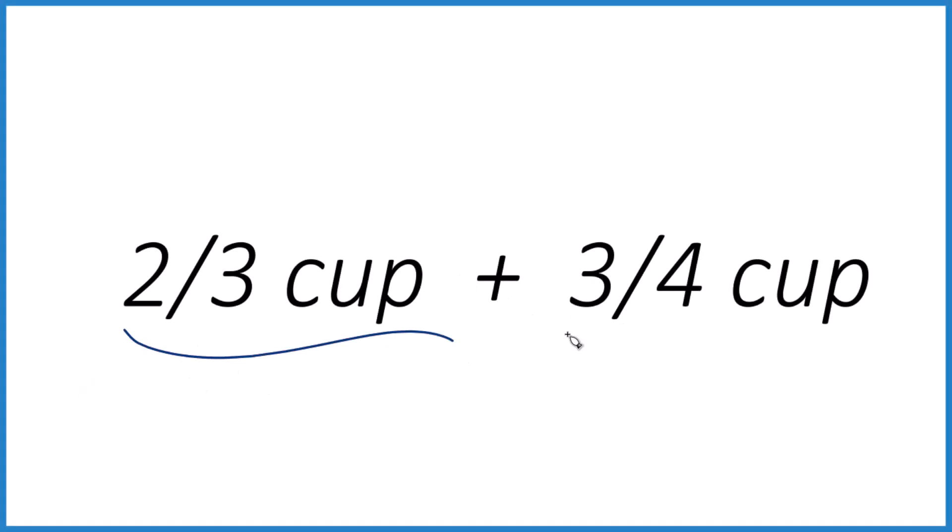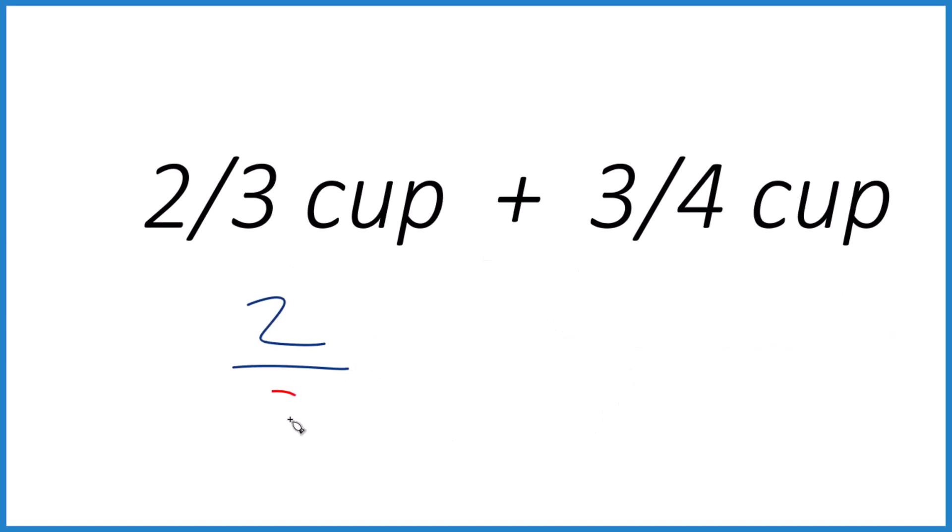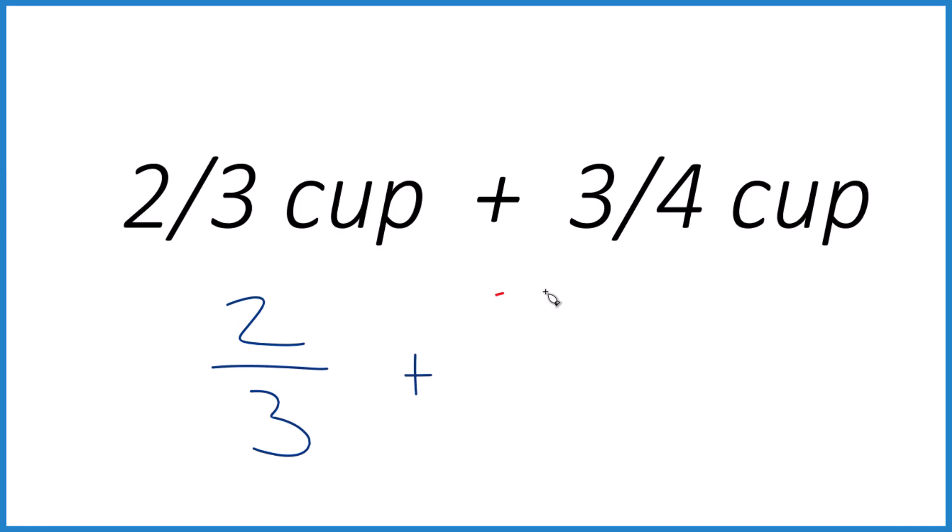Let's add two-thirds of a cup plus three-fourths of a cup. It's a bit of work, but it's not too bad. So we have two-thirds plus three-fourths.